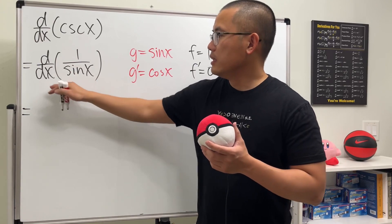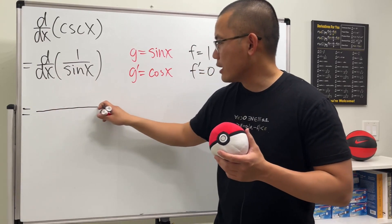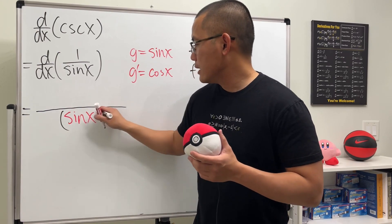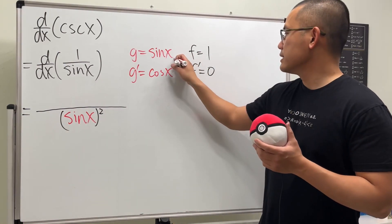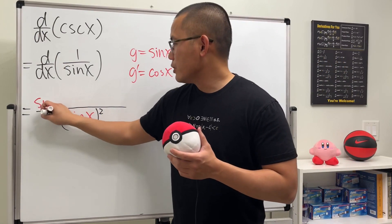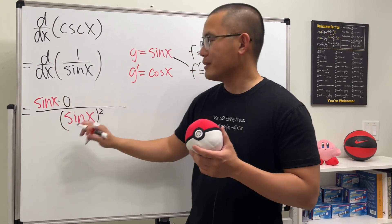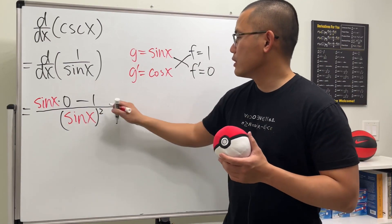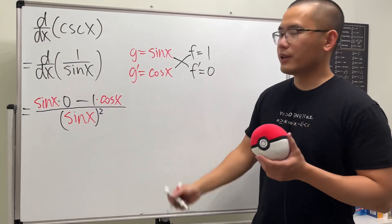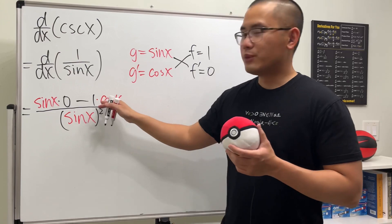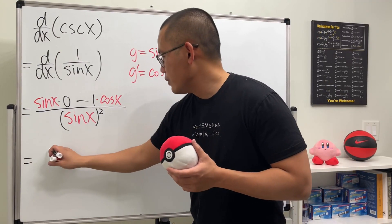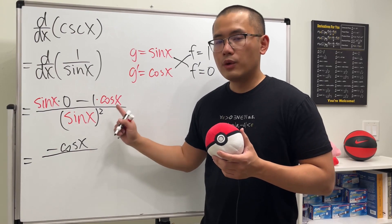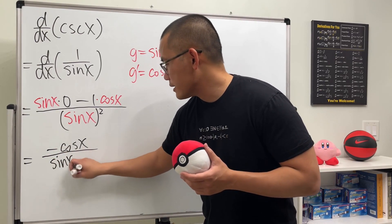To take the derivative of this, let's put down a fraction bar and square the bottom, which is sine x squared. For the top, we do this times that first — so sine x times 0. I know the answer is 0 for that part. And then we are going to subtract this times that, so we have 1 times cosine x. Of course, we know that first part is equal to 0, and right here we have negative cosine x — so we have negative cosine x on the top over sine x times sine x.